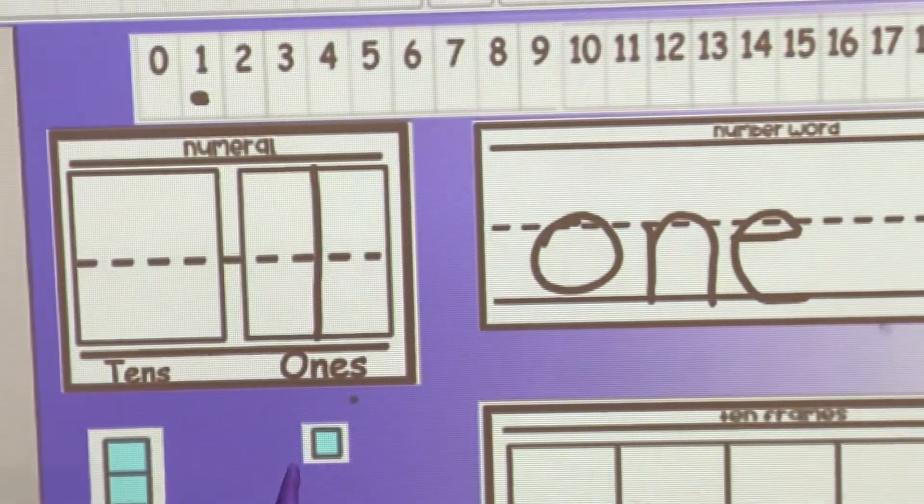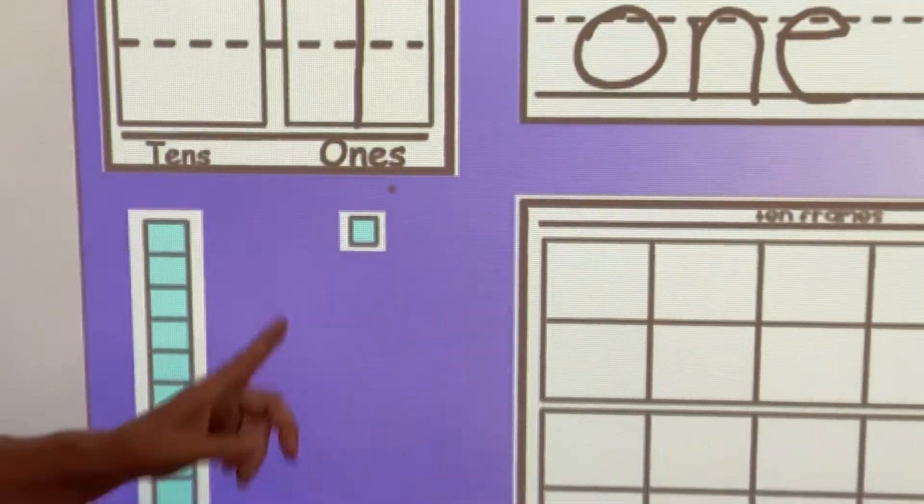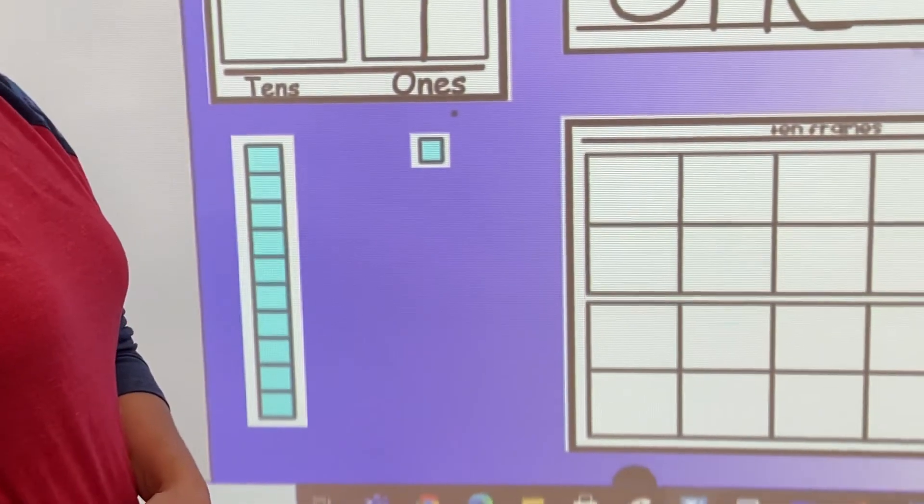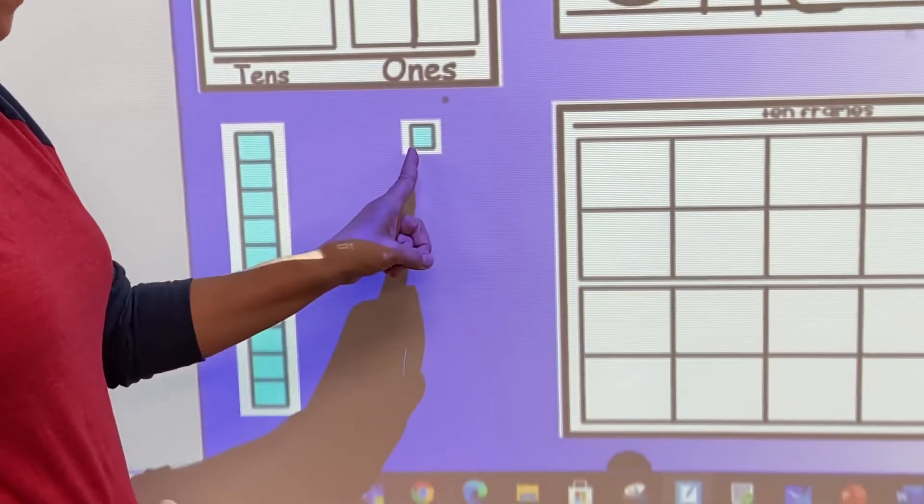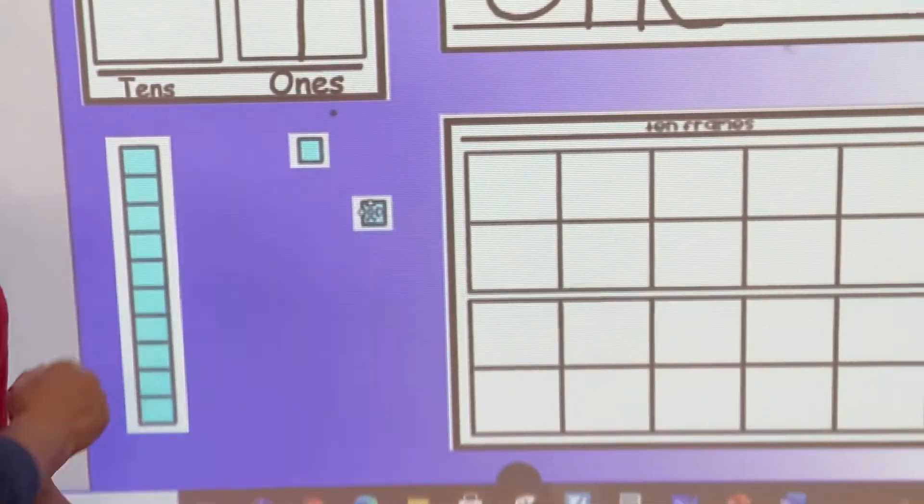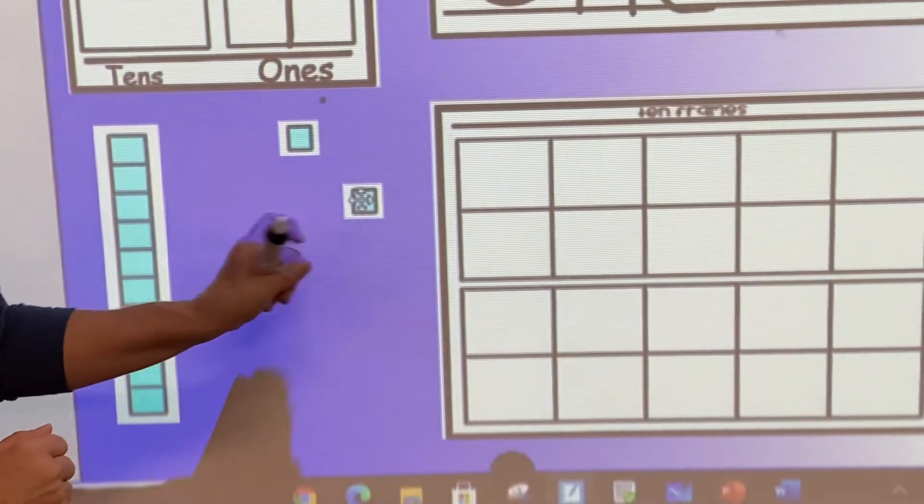So how many of these squares do you think I need to count out? One. That's right. So I'm going to touch my square and I'm going to count out one. One. One square.